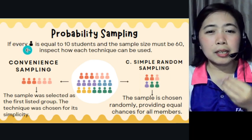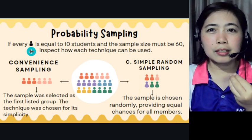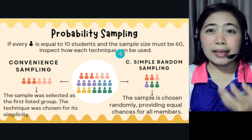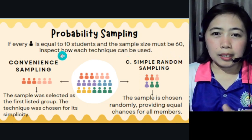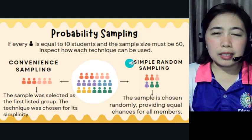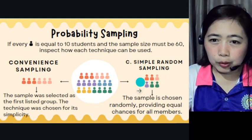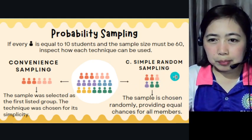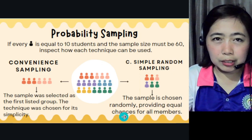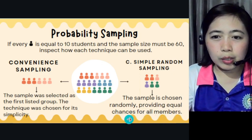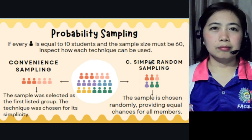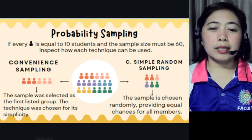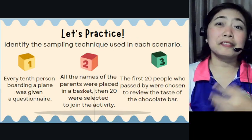For every participant or respondent, the population is 10 students and the sample size must be 60. For simple random sampling, the sample is chosen randomly, providing equal chances for all members — no hard feelings, it's fairness and equality.